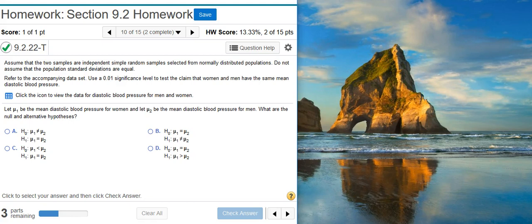The first part of this problem asks us for the null and alternative hypothesis. It defines mu1 as the mean diastolic blood pressure for the women and mu2 as the mean diastolic blood pressure for the men. Remember that the null hypothesis is always a statement of equality. So answer options A and C are not going to be correct. Between answer options B and D, we need to look at the alternative hypothesis.